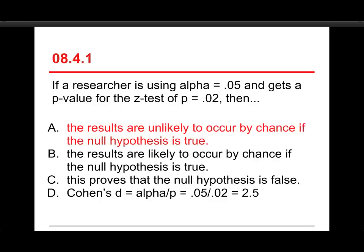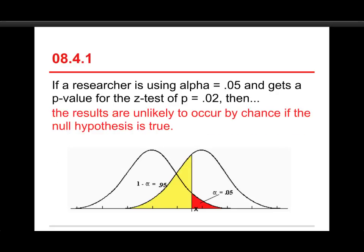Well, the answer here is A, the results are unlikely to occur by chance if the null hypothesis is true. I'll show you why in a second. B just gets it flipped around the other direction. C, this proves that the null hypothesis is false - remember, we're not in the business of proving things. The data are either consistent or inconsistent, and it's very hard to prove something with probabilistic data. And that Cohen's d stuff, that's not the formula for d, I just made that up.